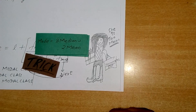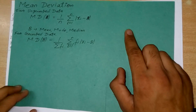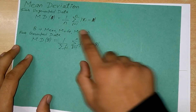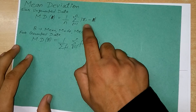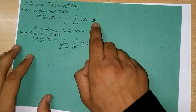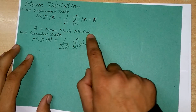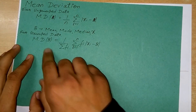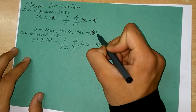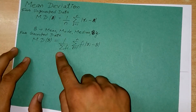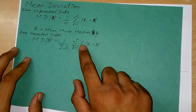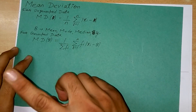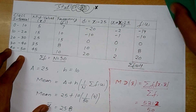Now moving to mean deviation. For ungrouped data, mean deviation is (1/n)·Σ|x_i − B|, where B can be the mean, median, or any value — it is not necessarily restricted to those three. For grouped data, the formula is (1/Σf_i)·Σf_i·|x_i − B|, and for continuous grouped data we use the same formula but take midpoints. In the example, we calculate x_i − x̄ where x̄ = 25.8.